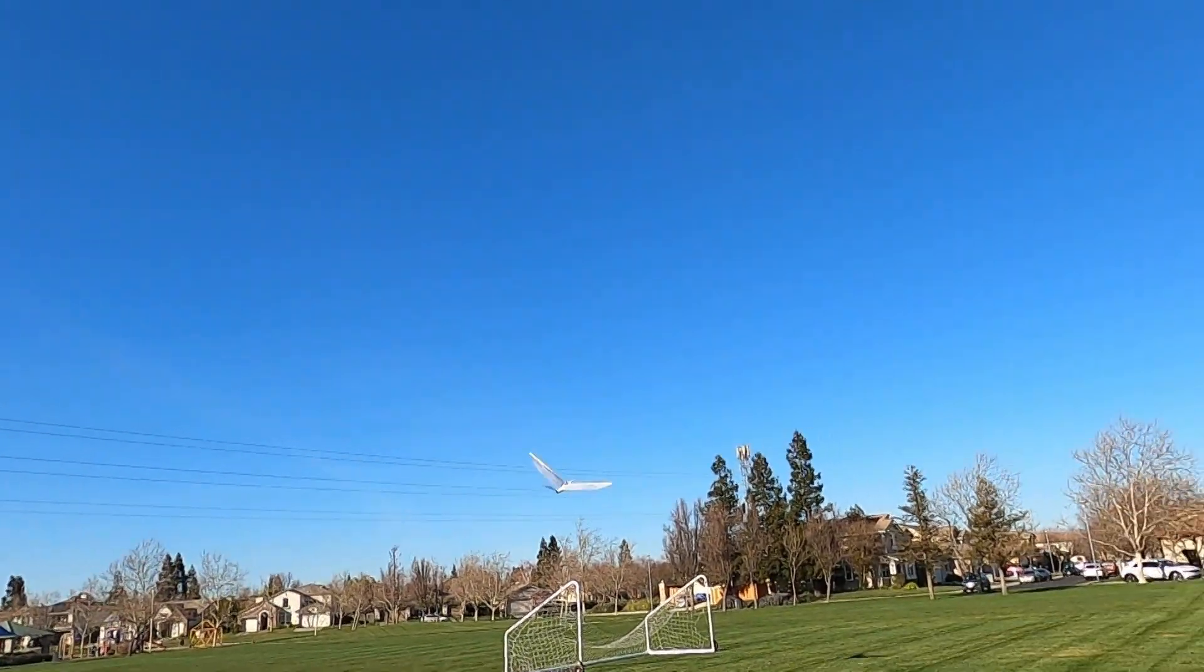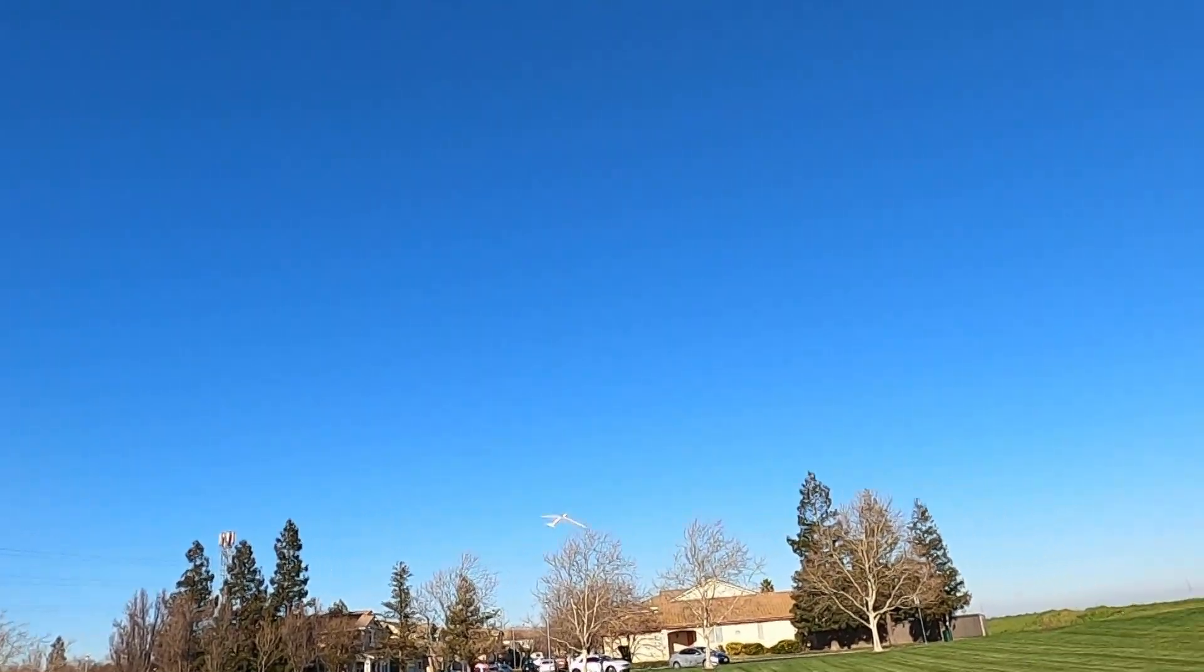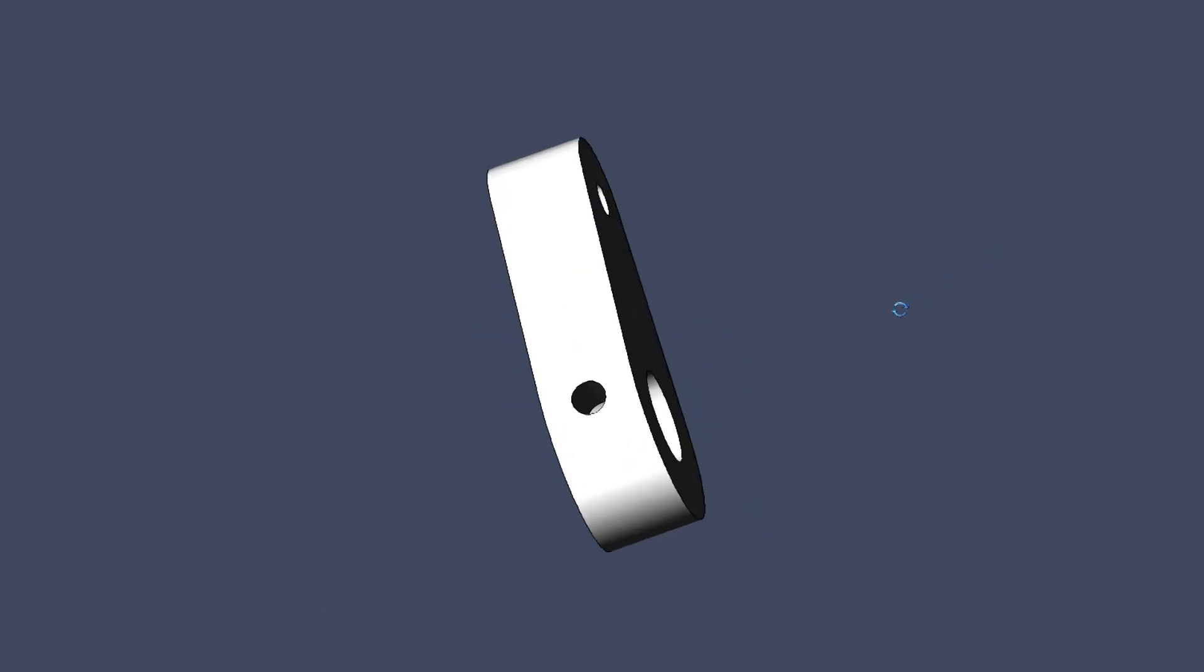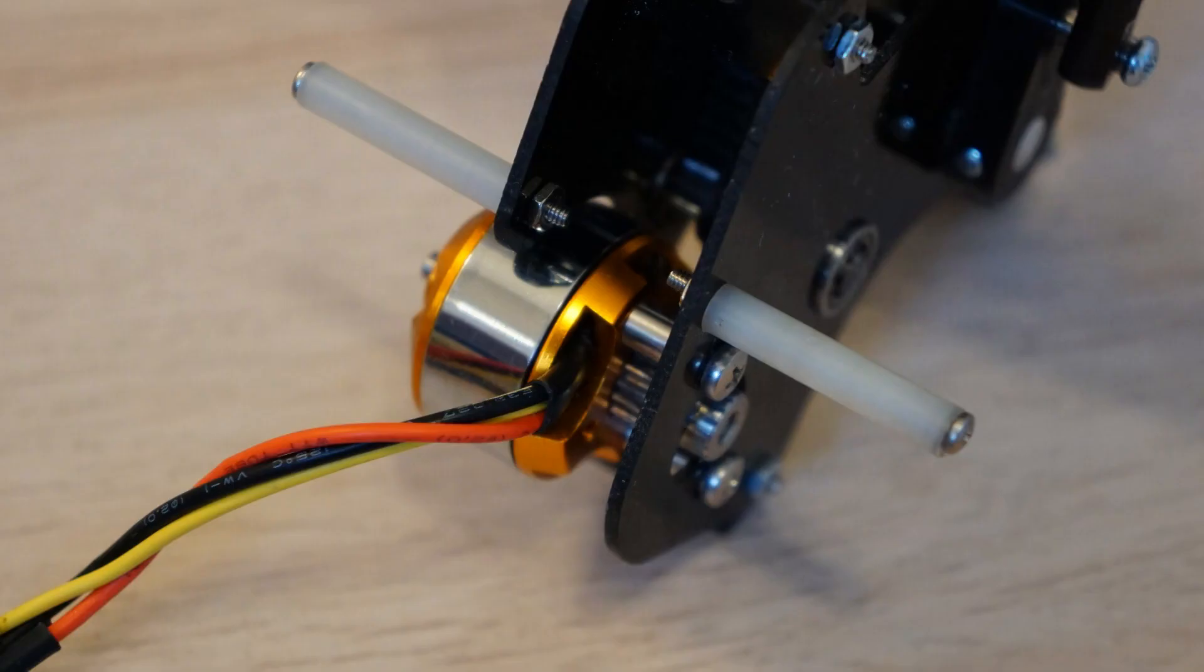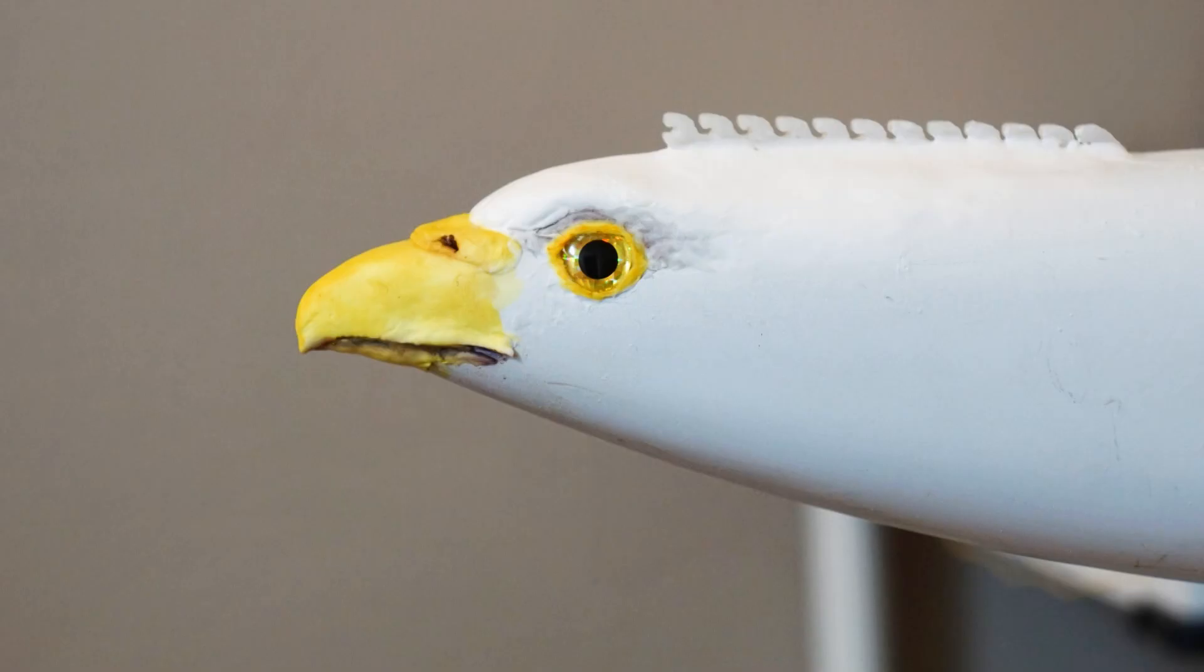Last time we took a look at the Crossbow 2 RC Ornithopter, which is available as a kit. This time we're going to look at some modifications that can add a whole new dimension to this ornithopter.